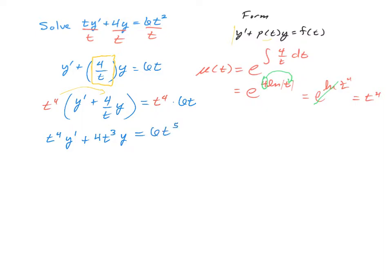Next step is to rewrite this as the derivative of a product. And this is clearly the derivative of our t to the 4th times y that we're differentiating to create the left side. And that's 6 times t to the 5th.